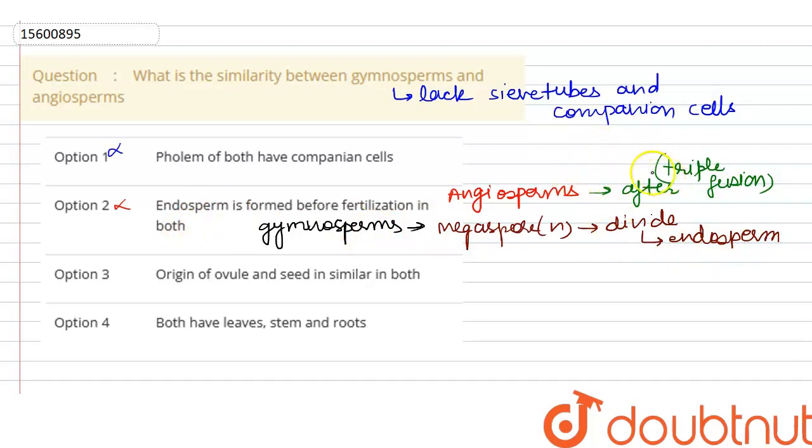It is called after fertilization. The origin of ovule and seed is similar in both which is also incorrect. The origin of ovule and seed in angiosperms.